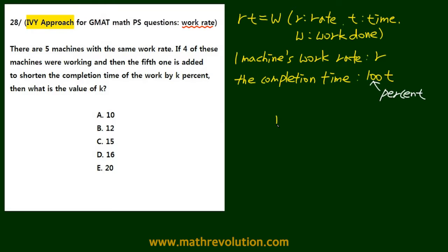So if we translate the question, we have R times 100T, and we have 4 machines, so we multiply 4. And this is equal to R times 100 minus KT. And there are 5 machines, so we multiply 5.